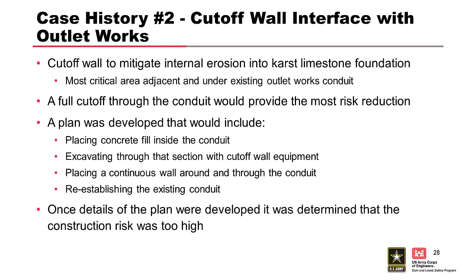The second case history involves Rough River Dam in Kentucky, an existing embankment dam where the project required construction of a cutoff wall to mitigate internal erosion of embankment and foundation soils into a karstic limestone foundation. Most of the cutoff wall could be built with standard hydromill construction techniques excavated in a slurry trench method. Unfortunately, the most critical location with the most open karstic network was directly under and adjacent to the existing concrete outlet works conduit, requiring a continuous cutoff wall that fully penetrates the karstic foundation rock, including underneath the existing conduit.